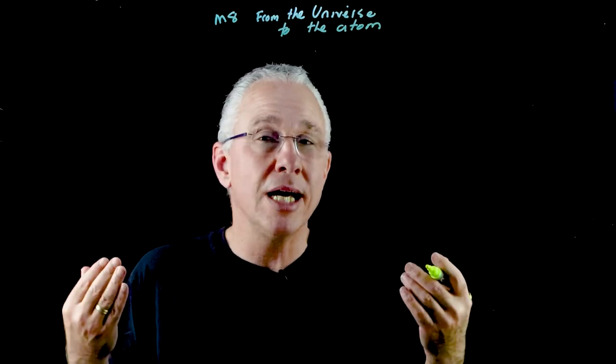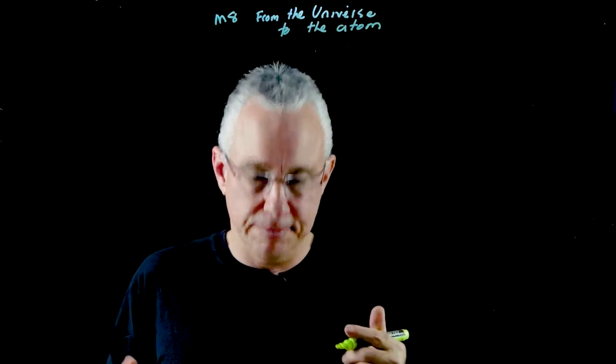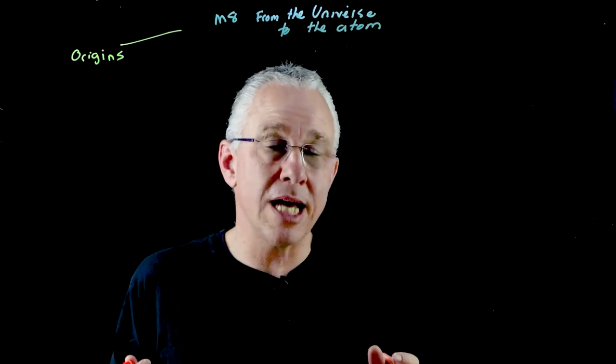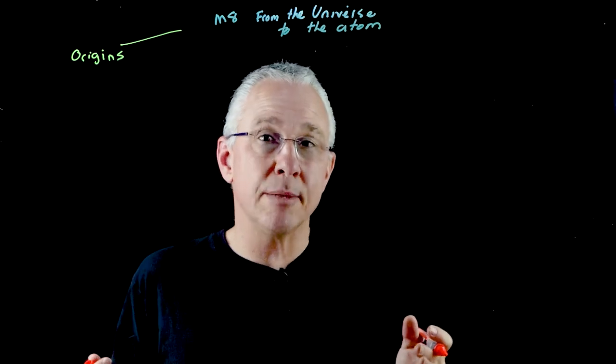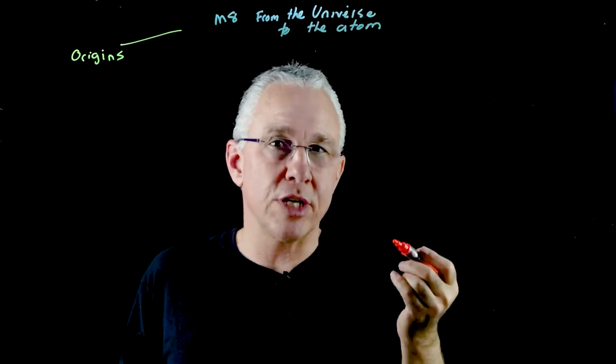The first inquiry question asks what evidence is there for the origin of the elements. The second inquiry question asks how is it known that the atom is made up of protons, neutrons and electrons. In essence we're dealing with the atomic structure.